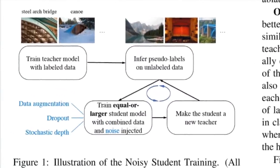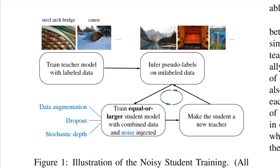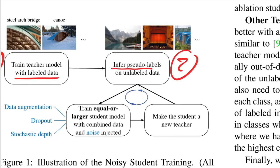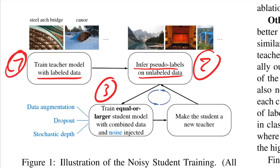The technique is pretty simple. Step one: train the teacher model with labeled data as normal. Step two: infer pseudo labels on unlabeled data. Step three: train an equal or larger student model with combined labeled and pseudo-labeled data with noise injected. They use the original labeled data and the pseudo-labeled data together to train the student. The student doesn't have more true label information than the teacher — it simply has the teacher-labeled unlabeled data to also train on.